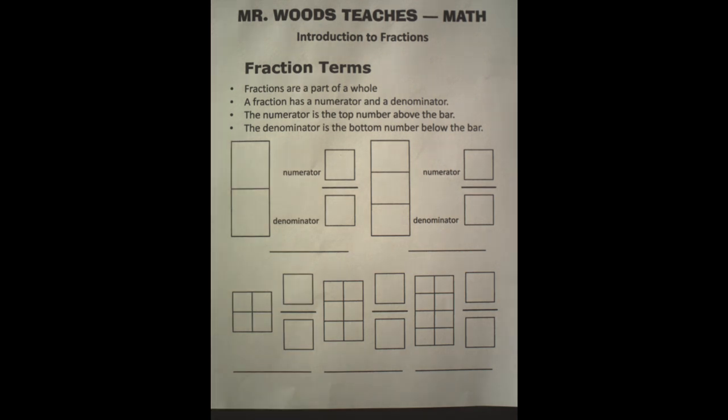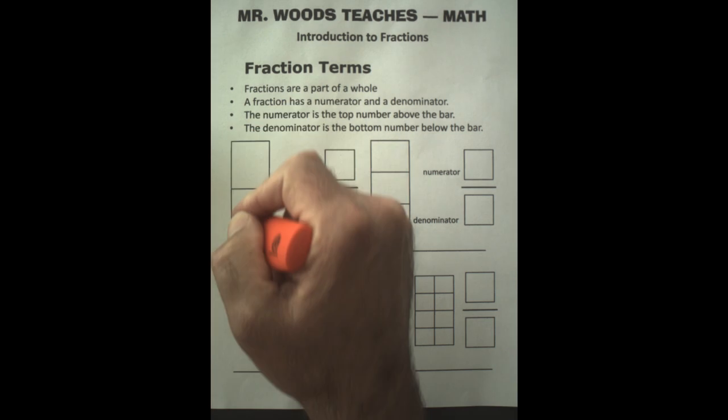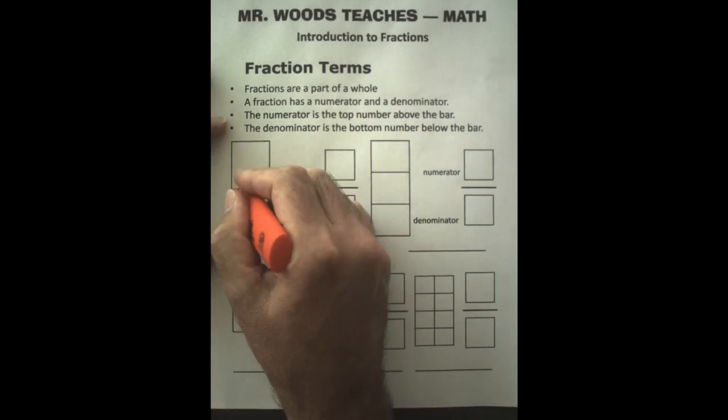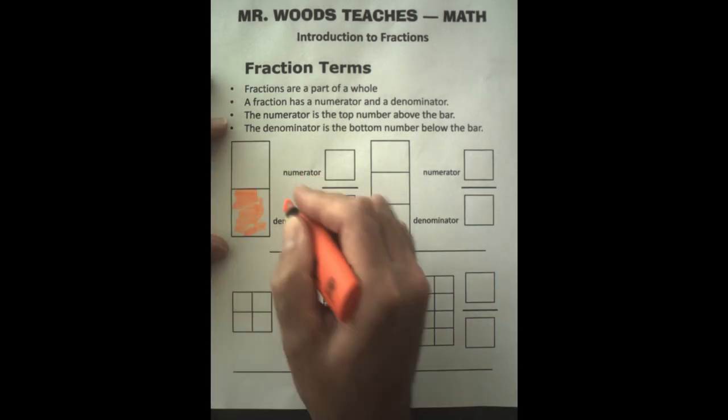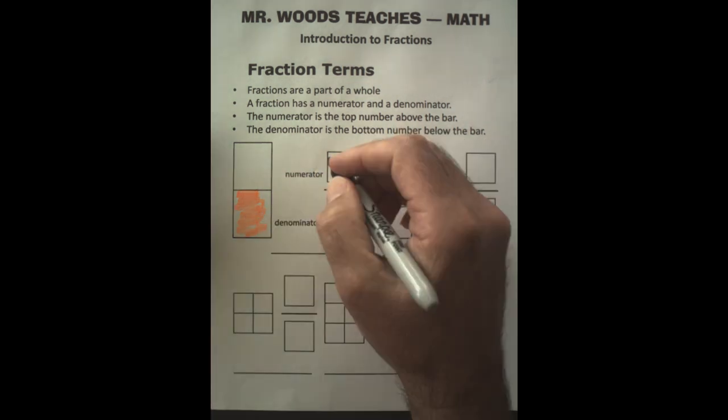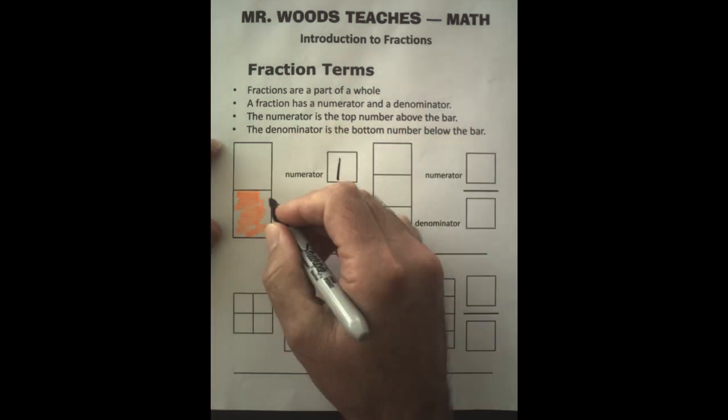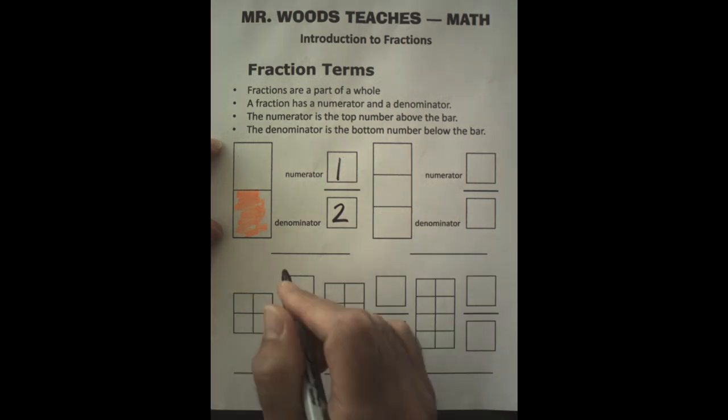Let's look at our first example here. We have two pieces of a whole. If I shade in just one of those pieces, that's going to mean that I put the shaded in part up here, and then the whole, which is two, down here. That is considered one half.